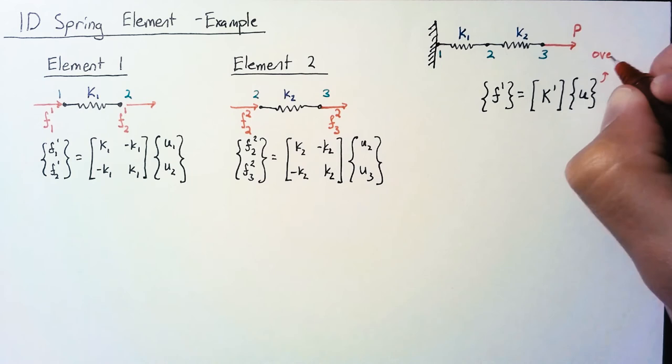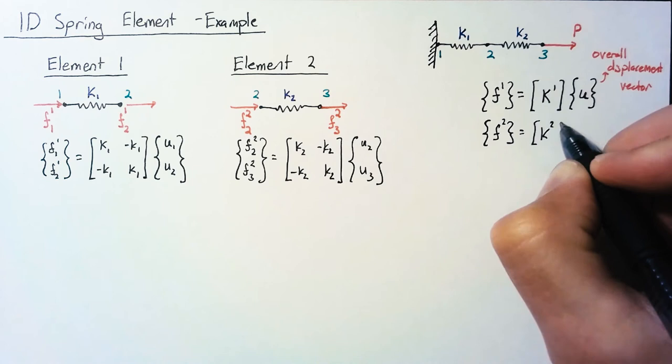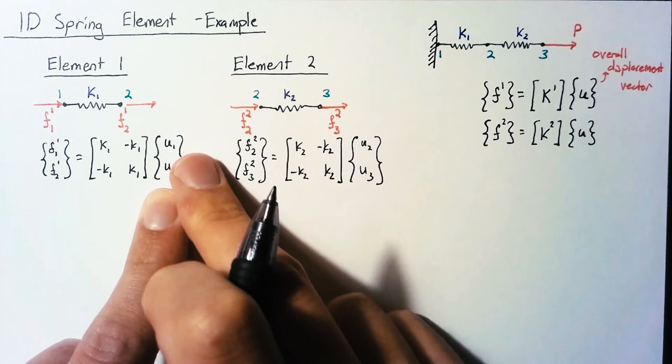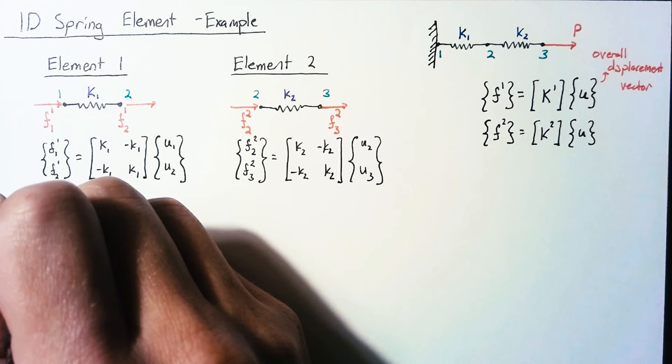So let's go ahead and write these out using the overall displacement vector. Now the overall displacement vector is going to have all three displacements in it. So we're going to have to have a 3 by 3 stiffness matrix and a force vector that is three elements long as well.